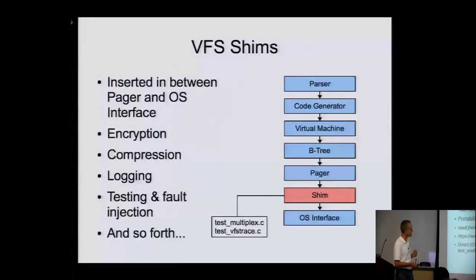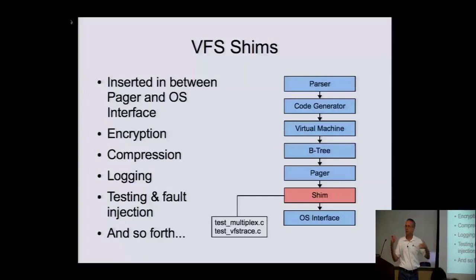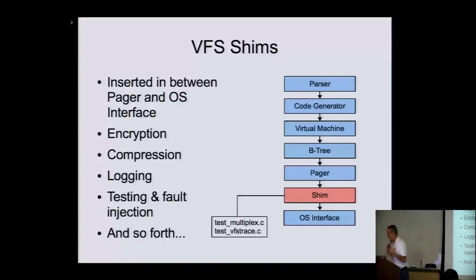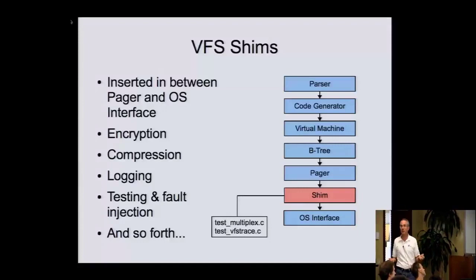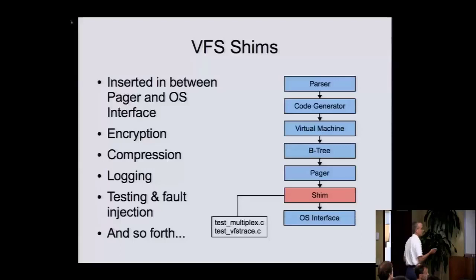Because it's runtime-pluggable, we have this concept of a shim where you can plug in your own OS interface that doesn't do a complete OS interface — it just maybe changes the calls around a little bit and then passes it on down to the real OS interface. This could do things like add encryption or compression, do logging. We use this a lot for testing because we can plug in a shim that can simulate hardware failures, and that way we can prove that SQLite is going to be able to recover gracefully.